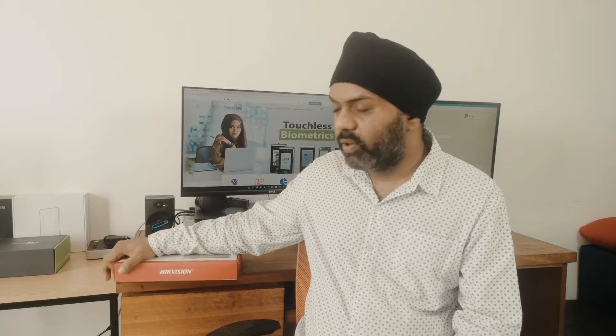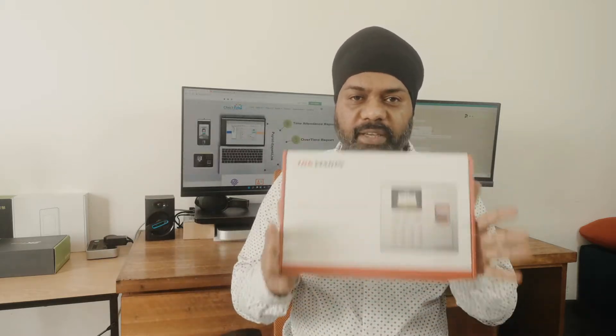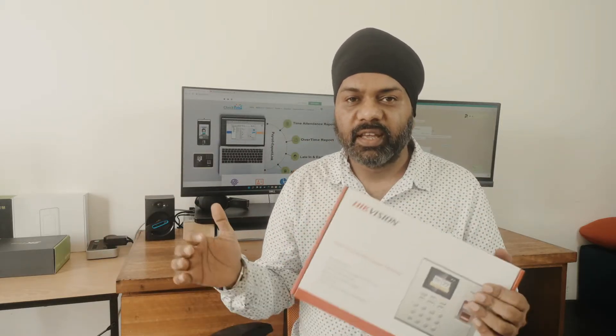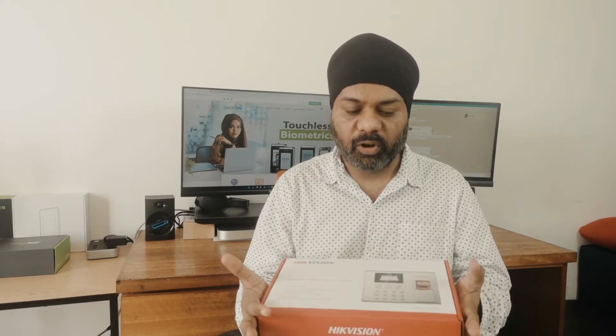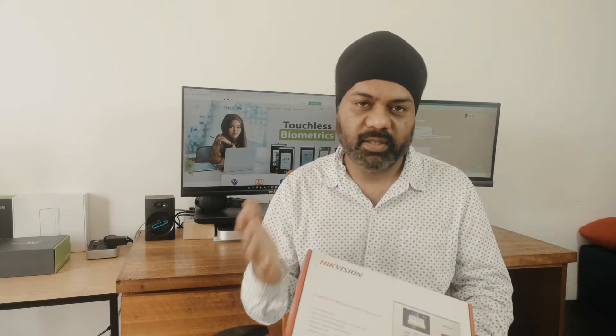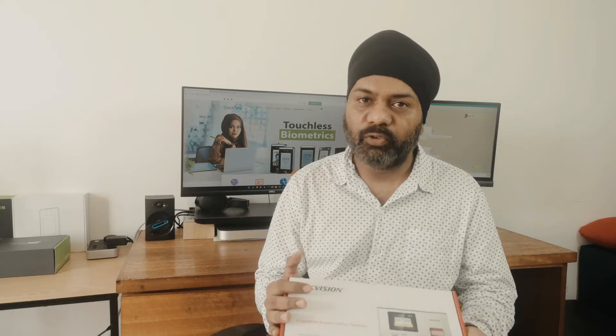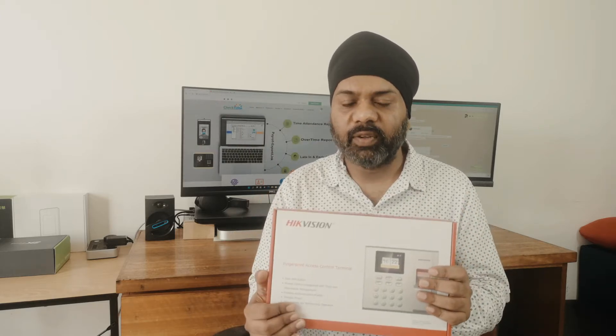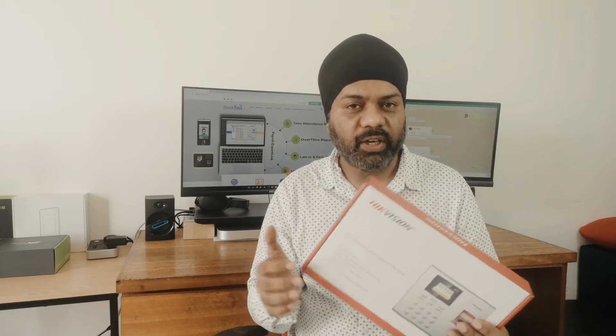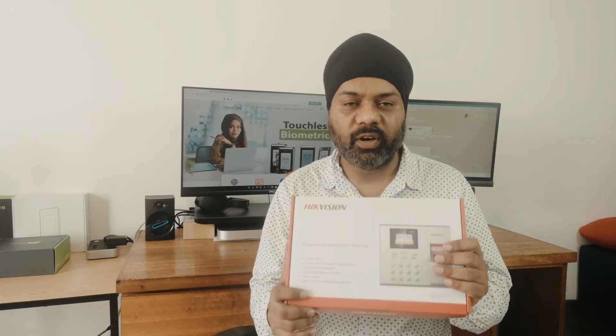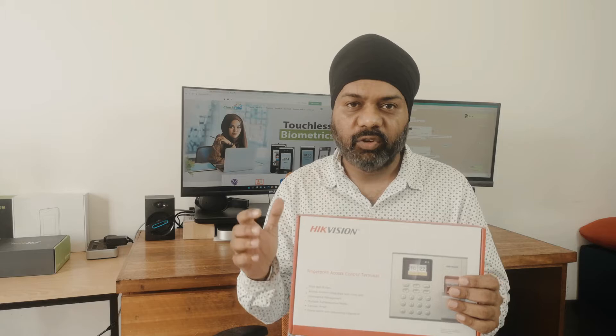Hi friends, this is Sohi here. Today we are going to unbox the device from HIK Vision. This is a low-end budget device, so you can use it for your small office or small business, something like a restaurant with below 50 workers. This device can also link with our software Check Time, so you can use it with all the reports and everything you can print from our software. Let's see what's inside the box.